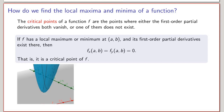How do we find the local maxima and minima of a function? Recall that for functions of one variable, if a point is a local maximum or minimum, then it must be a critical point — meaning the first derivative either vanishes or does not exist. We have a similar statement for functions of two variables. The critical points are the points where either both first-order partial derivatives vanish, or at least one does not exist. If f has a local maximum or minimum at a point and its first-order partial derivatives exist there, then they must both vanish.